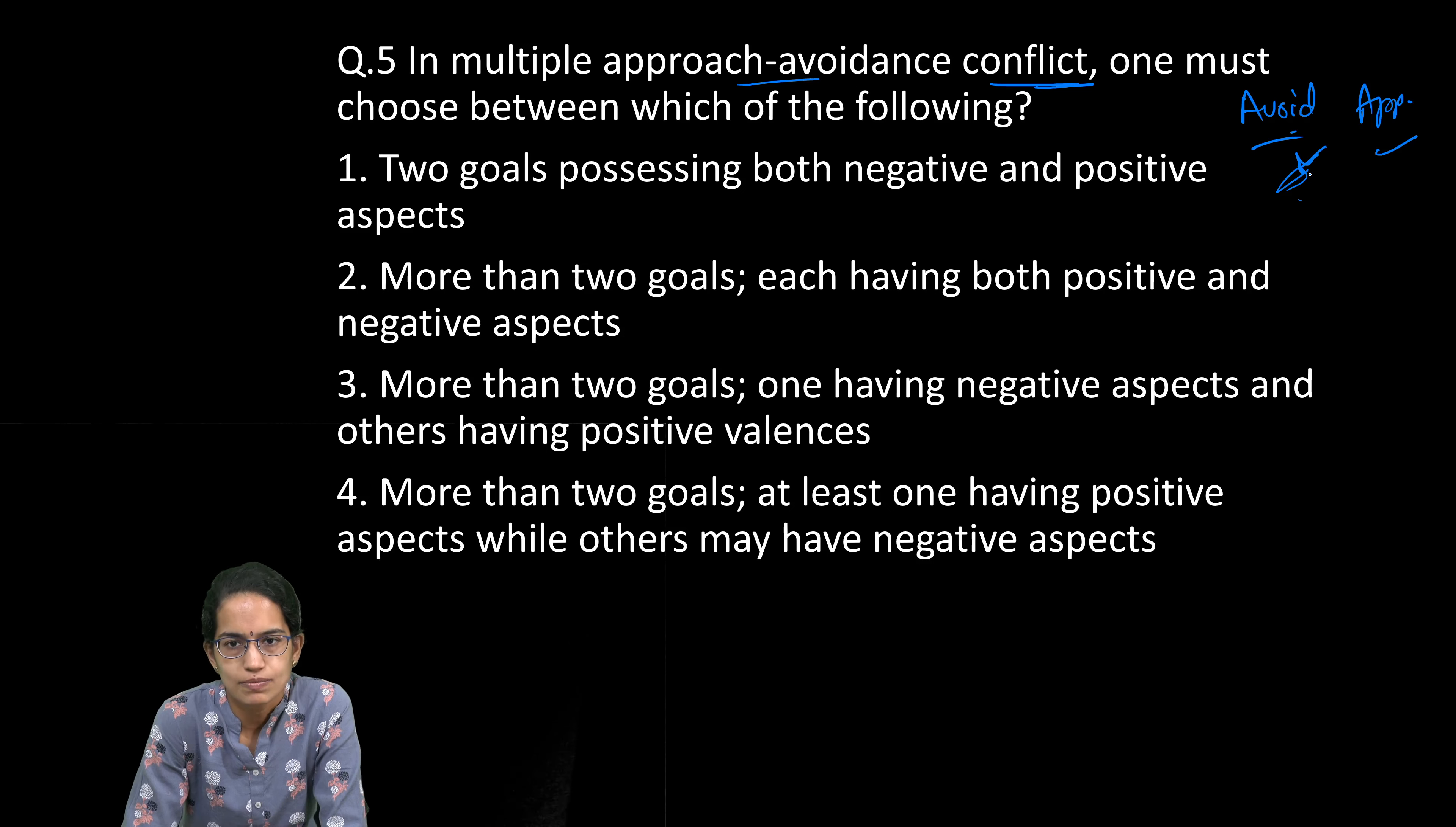Multiple is where two or more things are involved. Under this, there are more than two goals, each having both positive and negative aspects. Therefore, we call this a multiple approach-avoidance conflict. This is the right answer. Very direct question from Erikson's theory and the types of conflicts explained in Erikson's theory.